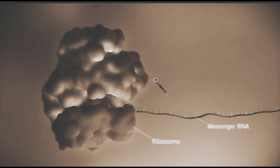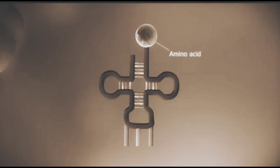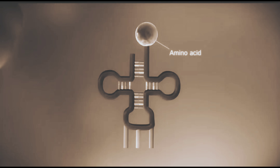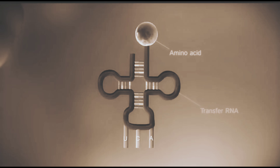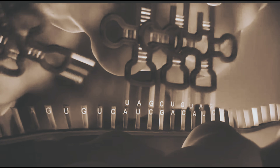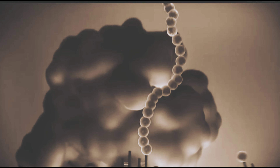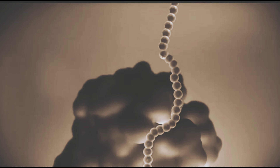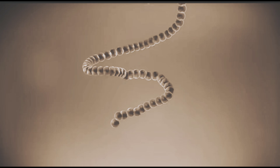The ribosome reads the code in the messenger RNA to produce a chain made up of amino acids. There are 20 different types of amino acids. Transfer RNA molecules carry the amino acids to the ribosome. Once the last amino acid has been added, the chain folds into a complex 3D shape to form the protein.